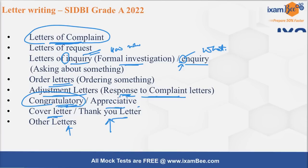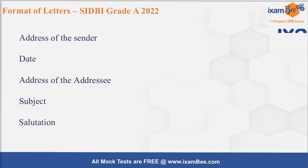Once you understand what format you need to follow, how your opening lines should be, what should be in the body, and how you are going to conclude, then it is going to be really easy for you to write a good letter. First, it will start with the address of the sender. In any letter, two parties are involved — sender and receiver — so when you are writing the letter, you are the sender, and you have to write your address, but not the exact correct address.